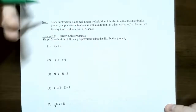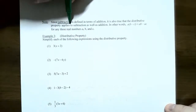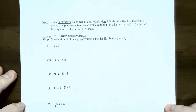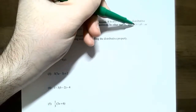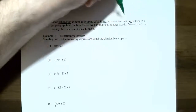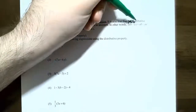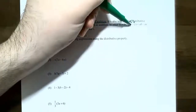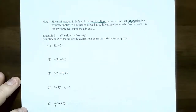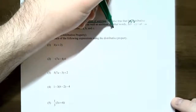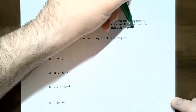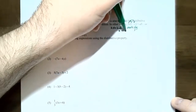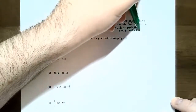Since subtraction can always be rewritten in terms of addition, there is also a distributive property for subtraction. If you have a times the quantity (b subtract c), you can distribute a to both b and c and keep the sign between the two products: a times b subtract a times c, where a, b, and c are any three real numbers.